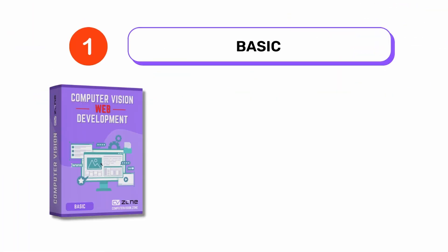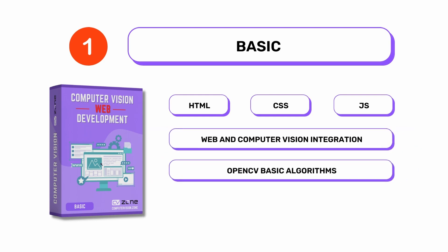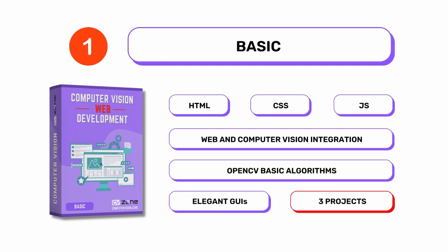So what is included in this course? We have split this course into four parts. In the first part, computer vision web basics, you will learn the basics of web development including HTML, CSS and JavaScript. We will go through the integration of computer vision and web development along with the OpenCV basic algorithms. We will also look into creating elegant graphical interfaces for your web apps. This part will include three projects.